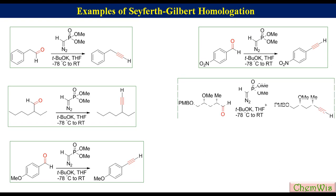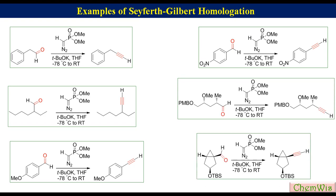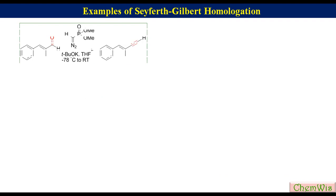These are chiral alkyne intermediates for natural product synthesis that have been made using the Seyferth-Gilbert homologation reaction starting from corresponding aldehydes. This is also an example of the conversion of an alpha-beta unsaturated aldehyde to a terminal alkyne.